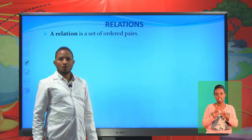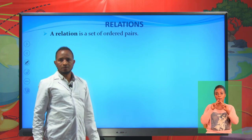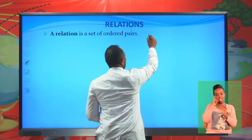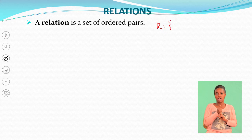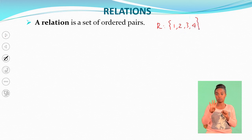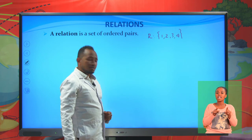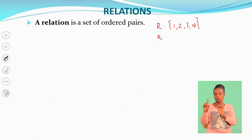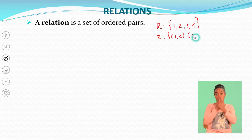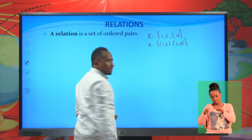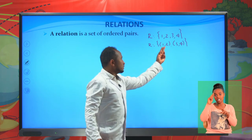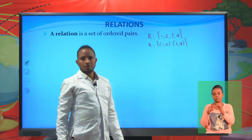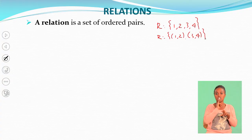A relation is a set of ordered pairs. For example, if we have {1, 2, 3, 4}, it is a set but it is not a set of ordered pairs — it is a set of single numbers. But if you take R = {(1,2), (3,4)}, this is a relation because it is a set of ordered pairs. So, relation is simple — it is a set of ordered pairs.